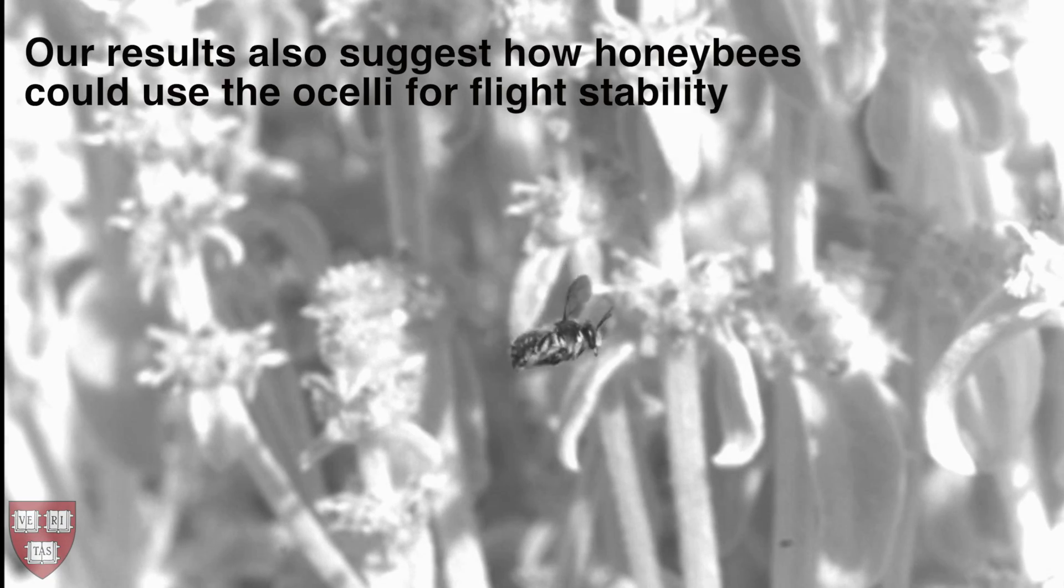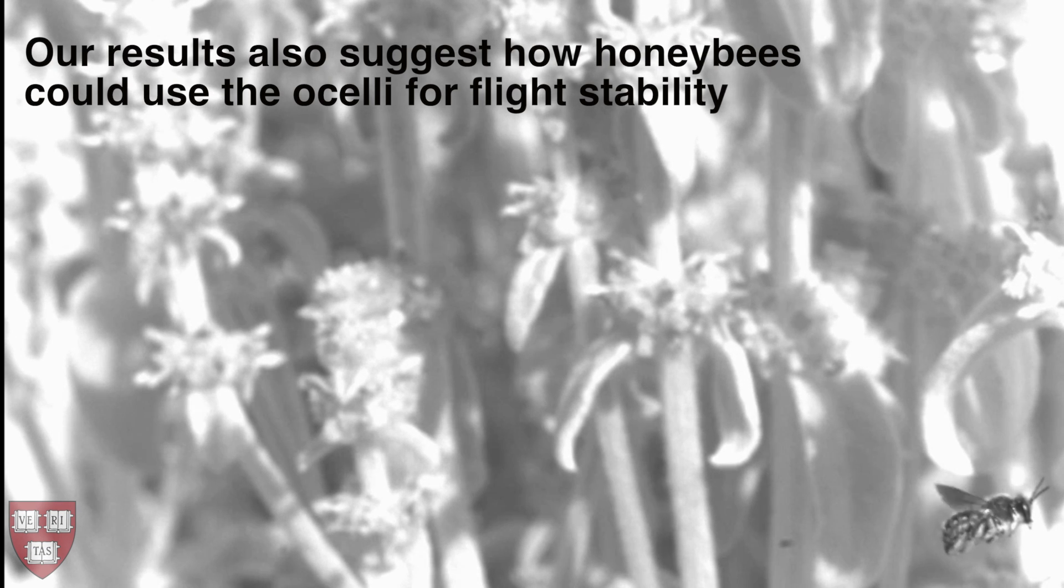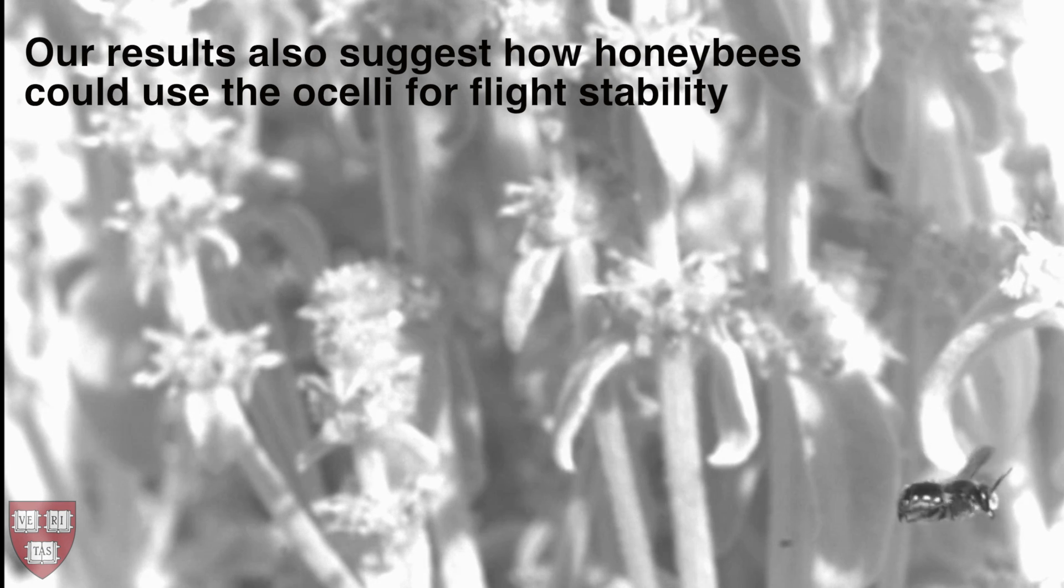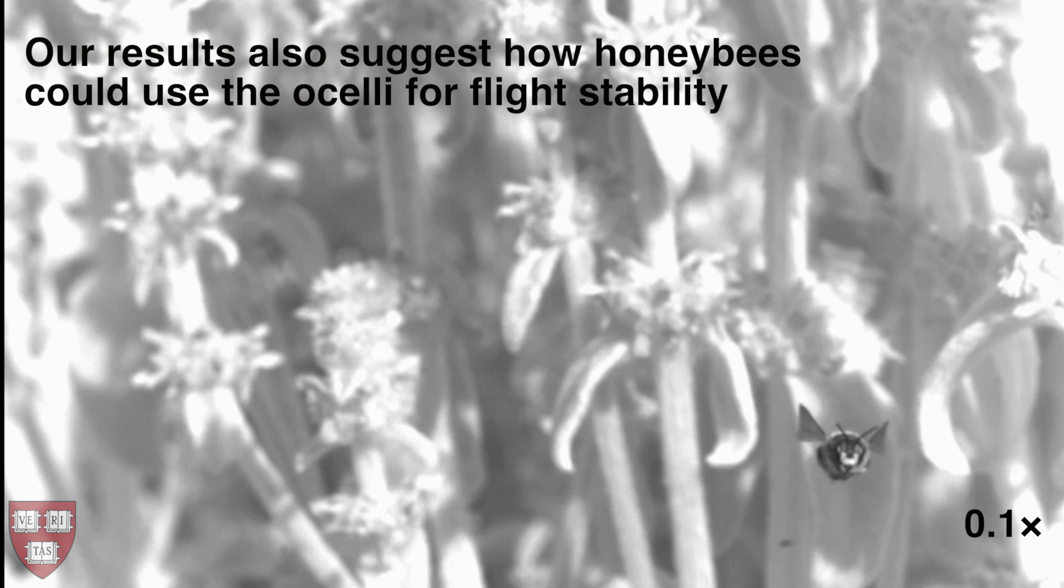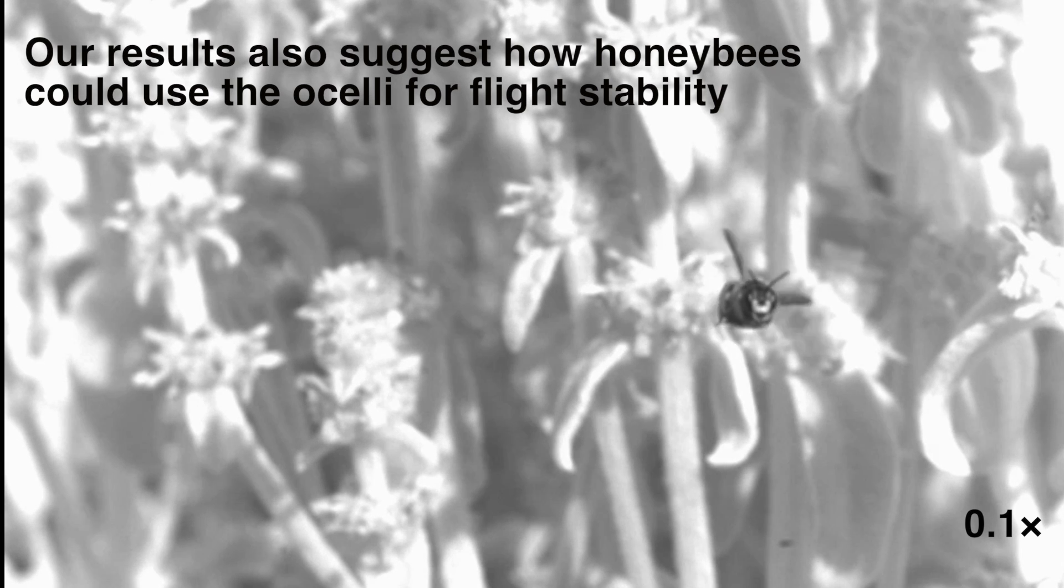Because the robotic fly is similar to flying insects, it can also be used to test hypotheses about biological flight control. Our results suggest how flying insects without gyroscopic organs, such as honeybees and bumblebees, could instead use the ocelli to stabilize their flight.